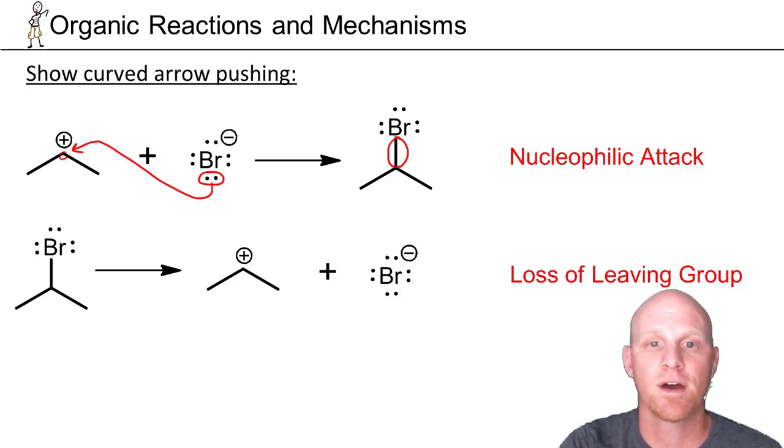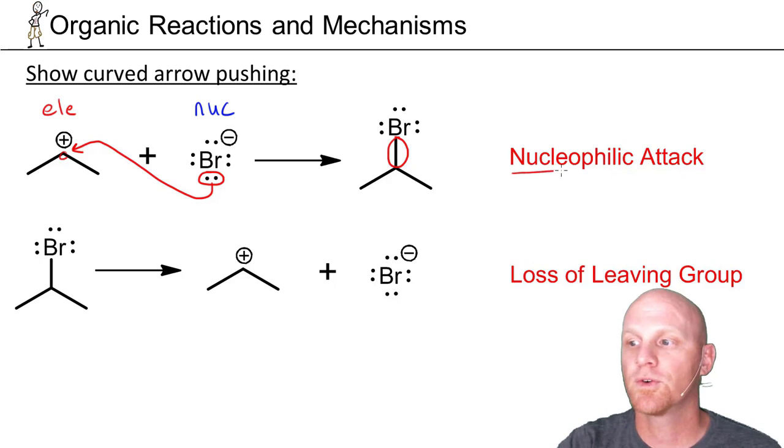We're making a new bond, and bromine is supplying those electrons. That makes bromine the electron pair donor, the nucleophile. And the carbon he's bonding to, who's just saying thank you very much, I accept your offer, is the electrophile. Overall, we call this nucleophilic attack, probably the most common type of mechanistic step you'll see throughout the semester.